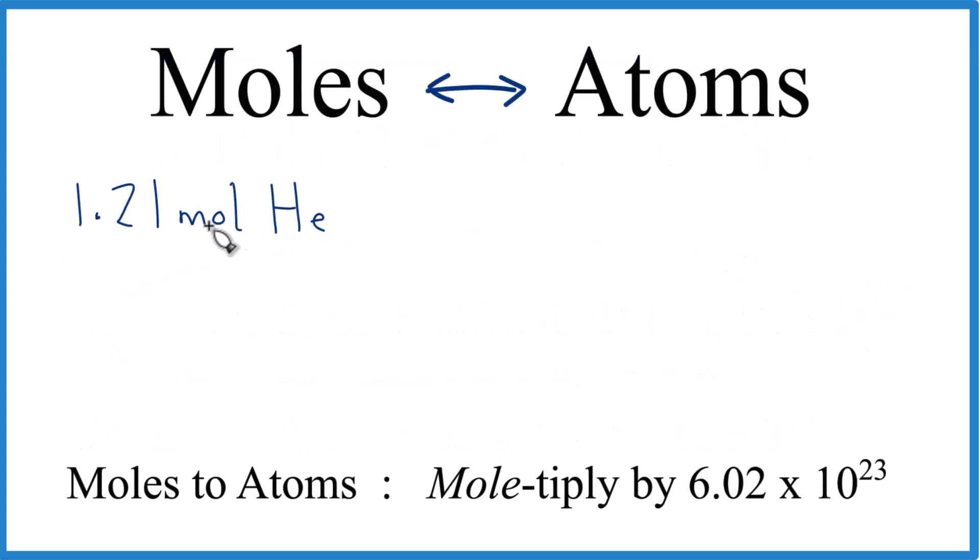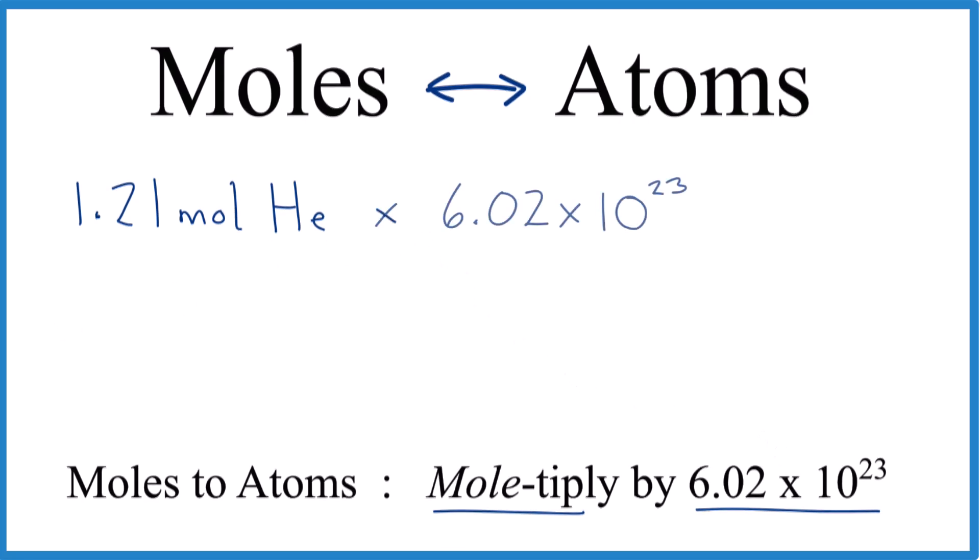So let's say you have 1.21 moles of helium. You want atoms. Moles to atoms, we're going to multiply by Avogadro's number, like this. And remember, Avogadro's number is 6.02 times 10 to the 23rd. But that's 6.02 times 10 to the 23rd atoms in one mole. So these are the units we're going to use here. That's real important.